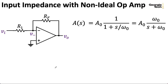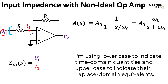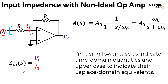To compute the input impedance, I need to either set up an independent voltage source and measure the current I1, or set up an independent current source and measure the voltage VI. I already have the circuit set up so that we're thinking about VI being a perfect voltage source. So we'll set VI and compute I1, and then we can compute our input impedance as just VI over I1.